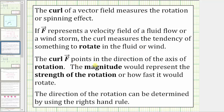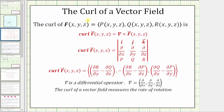The curl of f points in the direction of the axis of rotation, and the magnitude represents the strength of the rotation or how fast it would rotate. The direction of rotation can be determined using the right hand rule. There are several ways to express the curl of a vector field. If the vector field f has components p, q, r, then the curl of vector field f is equal to del cross with the vector field f.